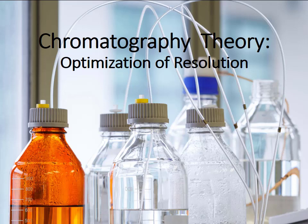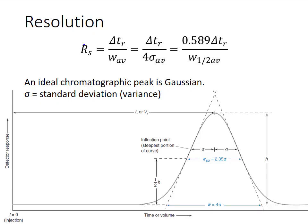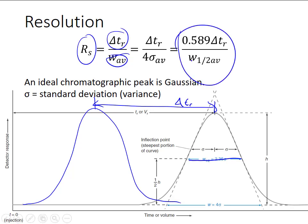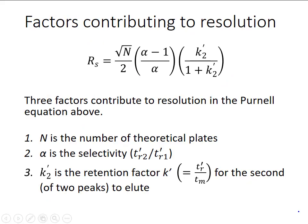In this video we'll look at the optimization of resolution. In the last video I defined resolution as an empirical parameter r-sub-s, defined as the difference in retention time of two peaks divided by the average of the width of those peaks. Since it's difficult to accurately measure the width, we instead measure the width at half height and use this relationship to define resolution.